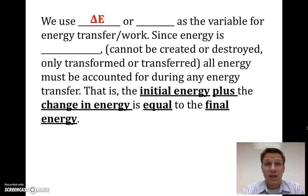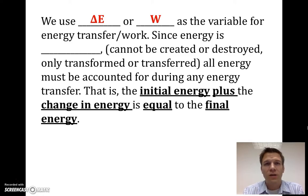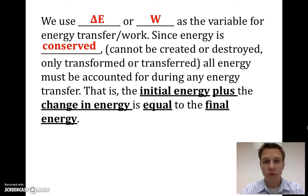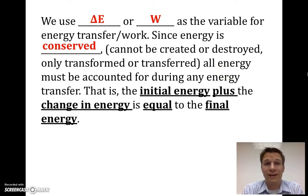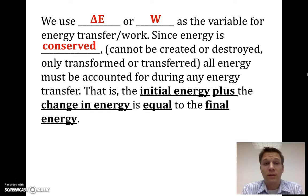We're going to use the variable delta E or capital W for energy transfer or work. You've heard the phrase 'energy is conserved' — that doesn't mean saving energy, it means energy can't be created or destroyed. It can only be transformed or transferred, and all energy must be accounted for during any energy transfer. The initial energy plus the change in energy has to equal the final energy.